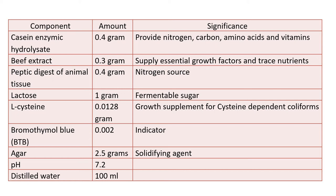Other components that support organism growth include casein enzymic hydrolysate, which provides nitrogen, carbon, amino acids and minerals; beef extract for essential growth factors and trace nutrients; peptic digestion of animal tissue for nitrogen sources; lactose as the fermentable sugar; L-cysteine added as a growth supplement for cysteine-dependent coliforms; BTB as the indicator; and agar as the solidifying agent.